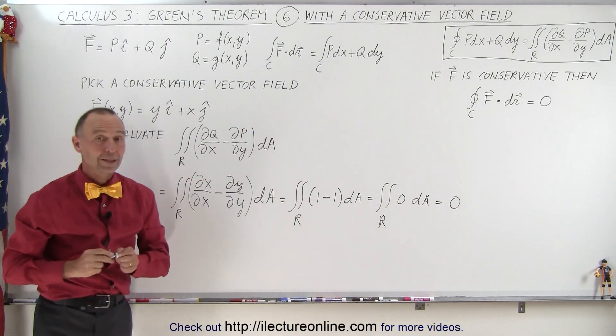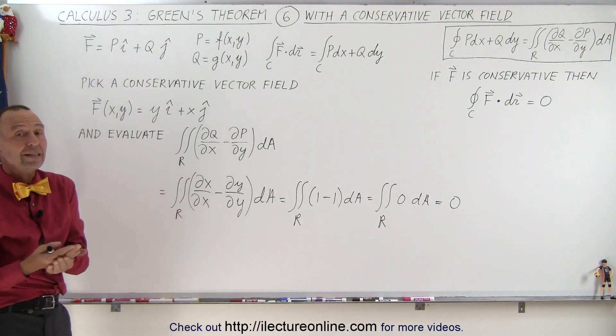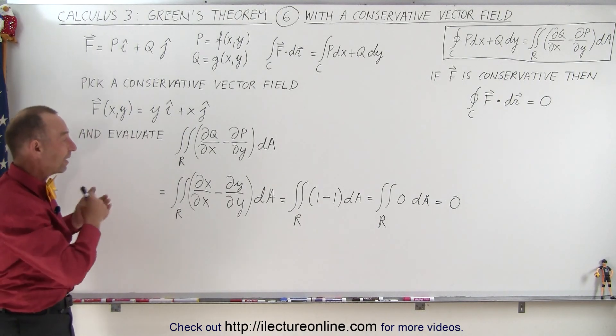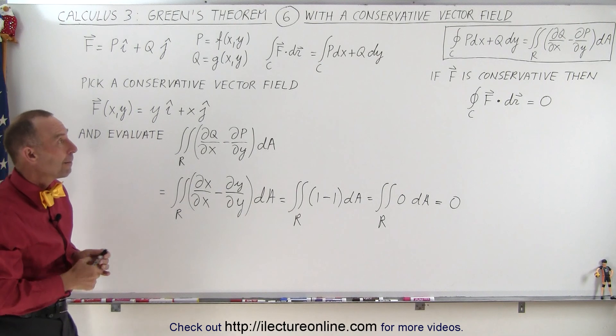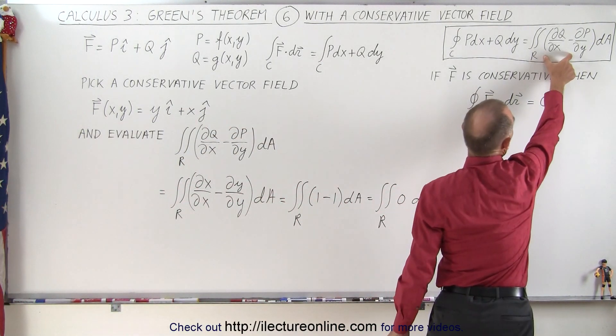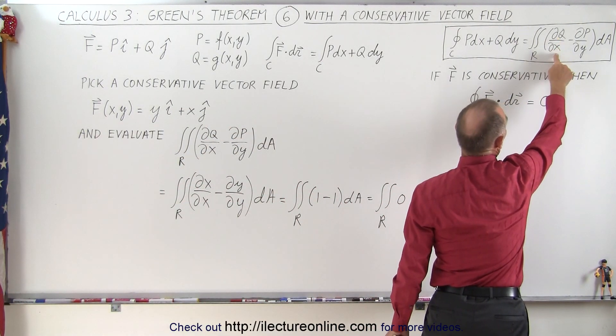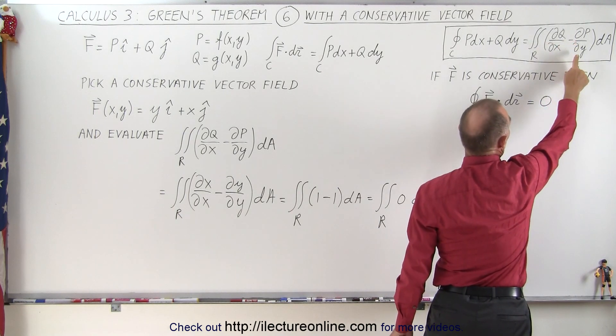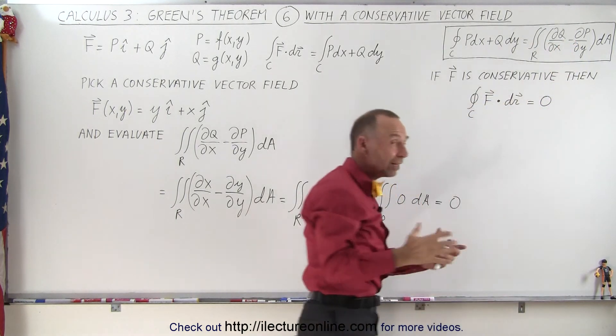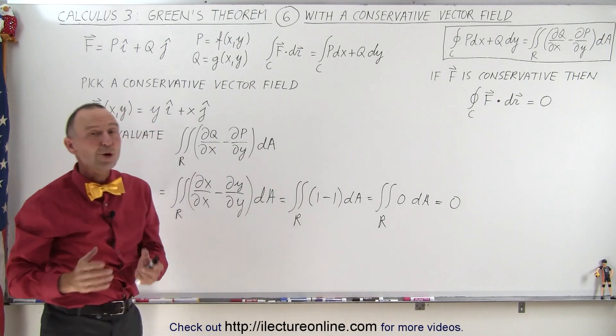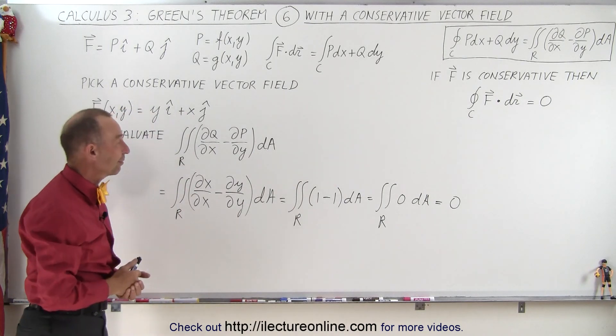So you can see that Green's Theorem can be used to find out if your vector field is conservative or not by evaluating this portion of Green's Theorem: the partial with respect to x of q minus the partial with respect to y of p. If that is equal to 0, then you know you have a conservative vector field.